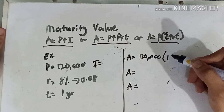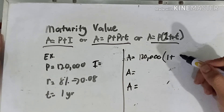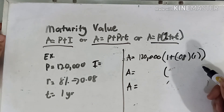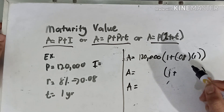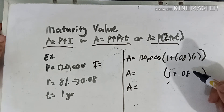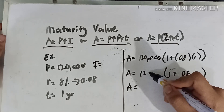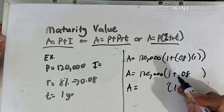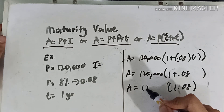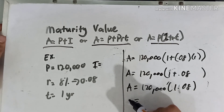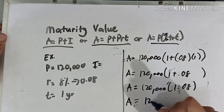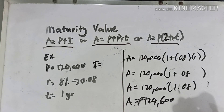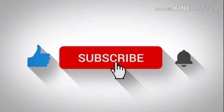Using the third formula, the maturity value A equals P times (1 + rt), which is 120,000 times (1 + 0.08 times 1). Solving inside the parenthesis first: 0.08 times 1 is 0.08, and 1 plus 0.08 is 1.08. So 1.08 times 120,000 equals 129,600 pesos. If you learned something from this video, please don't forget to like and subscribe.